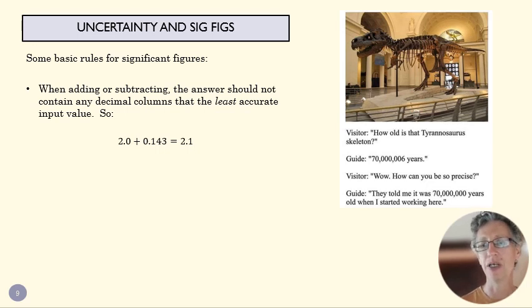And this example of the T-Rex is a great sort of illustration of that. When I add 6 to 70 million, I don't get 70 million and 6. I get 70 million. Because that 70 million was only presumably a couple of significant digits. And so adding that 6 doesn't really change that.